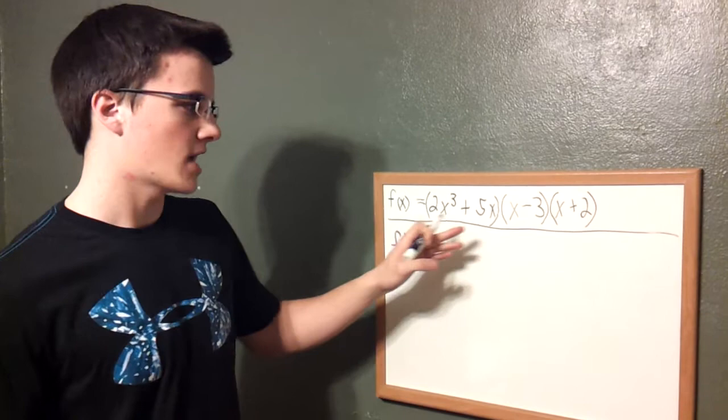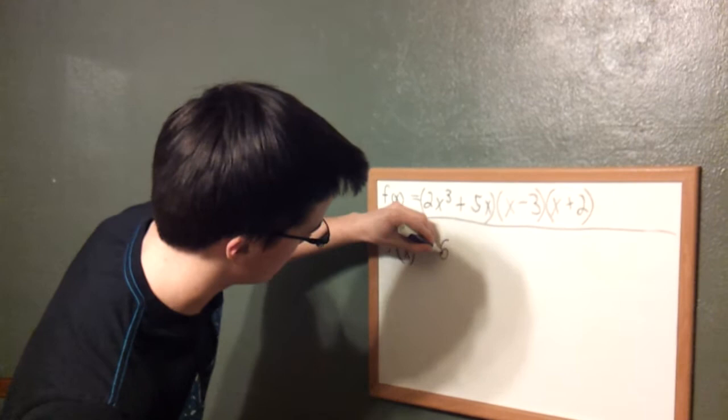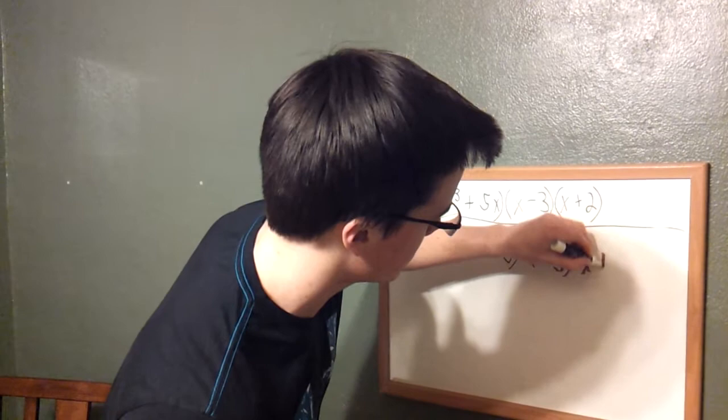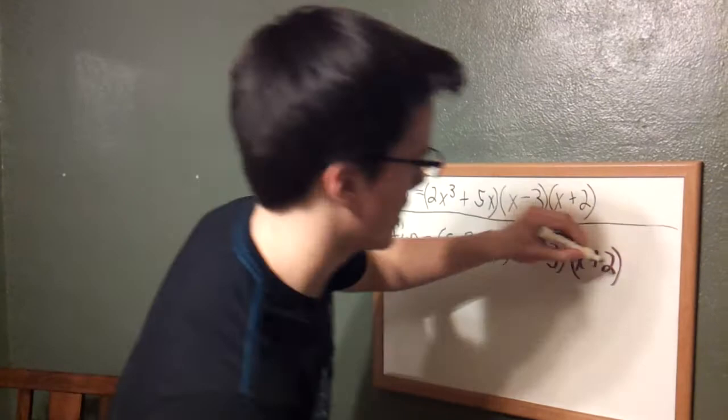Now in order to take the derivative of a problem like this, you have to take the derivative of each term one at a time and simply just tag the other ones on the end of it. So the derivative of the first term is 6x squared plus 5, and you simply just tag x minus 3 and x plus 2 right on the end.